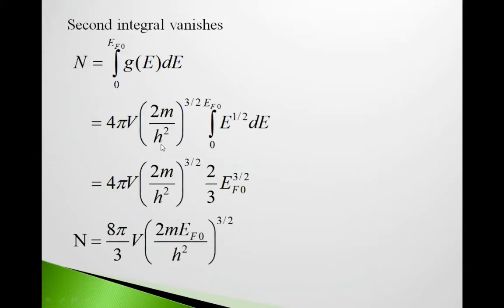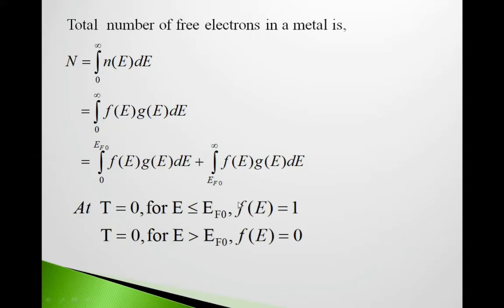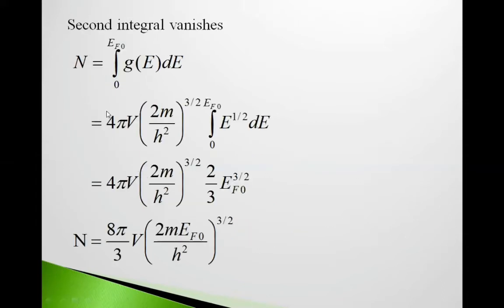So the second integral vanishes because we have f(E) = 0 in this second integration. Putting f = 1 in the first integration, it gives N = ∫₀^(EF0) g(E)dE.